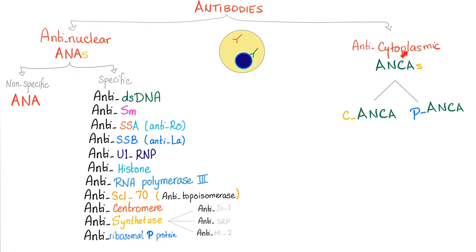Antibodies: anti-nuclear and anti-cytoplasmic. Anti-cytoplasmic, such as the ANCA — anti-neutrophilic cytoplasmic antibody — are antibodies against the cytoplasm of the neutrophil. We have C-ANCA and P-ANCA, and we have talked about them before.